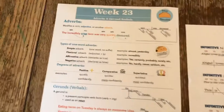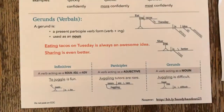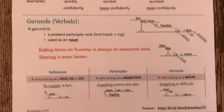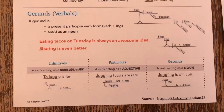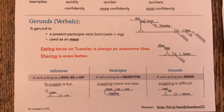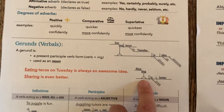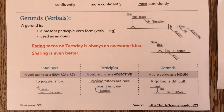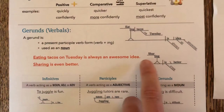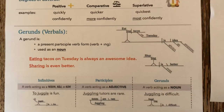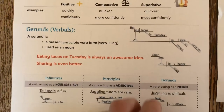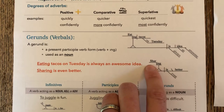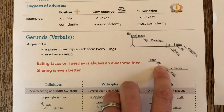Let's look at our week 23 handout down at the bottom half. I am going to look at the second sentence first because our first one is more complicated. So — sharing is even better. What is even better? Sharing. Sharing is an activity. It's a present participle and it's being used as a noun because it's an activity. So we would diagram that — this is an example of the subject noun and how we would diagram that gerund on your stair step.